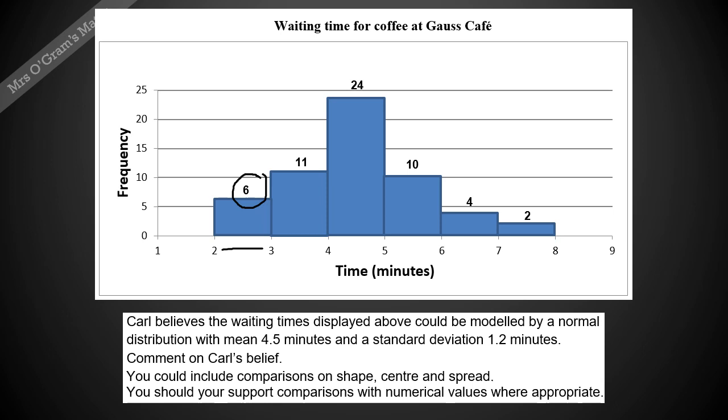He believes that this distribution could be modeled by a normal distribution with a mean of 4.5 minutes and a standard deviation of 1.2. We're going to make some comparisons with this distribution that we're given here and that normal distribution that was suggested and see what comes out.